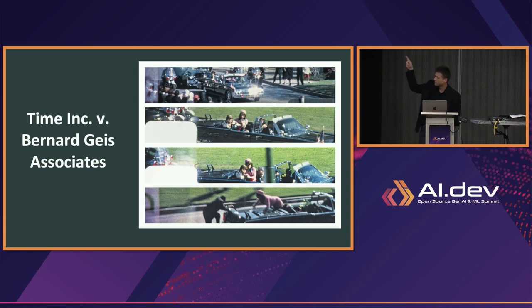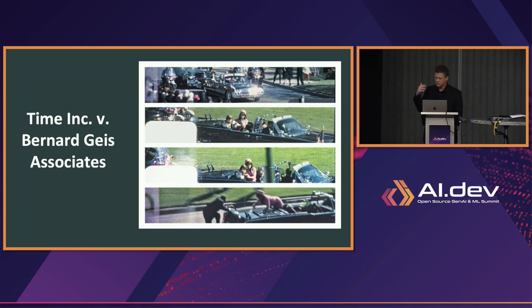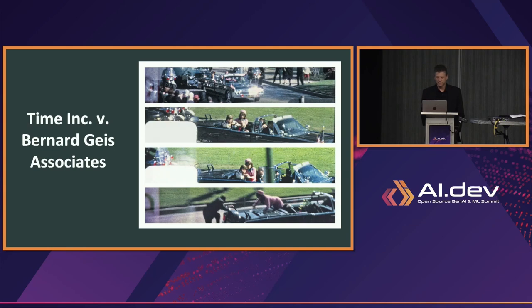This was next discussed extensively in the Geist case, about the Zapruder film of the Kennedy assassination. People said this is news, and all you did was put your camera in the right place — you weren't actually creating any art. According to the judge's reading of the then-current Copyright Act: 'Congress has explicitly made photographs the subject of copyright without any limitation, because no photograph can be unaffected by the personal influence of the author.' They quoted Sarony, Bleistein, and Jewelers' Circular, and then went to the preeminent copyright treatise Nimmer on Copyright, which said: 'Any photograph may claim the necessary originality to support a copyright merely by virtue of the photographer's personal choice of subject matter, angle of photograph, lighting, and the determination of the precise time when the photograph is to be taken.'